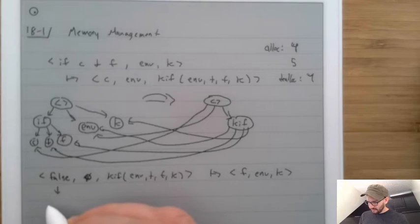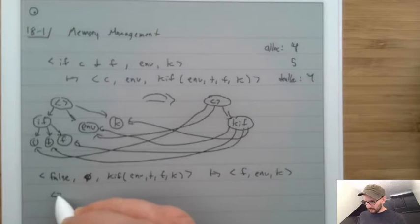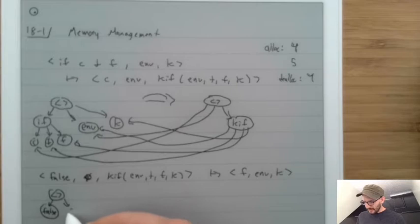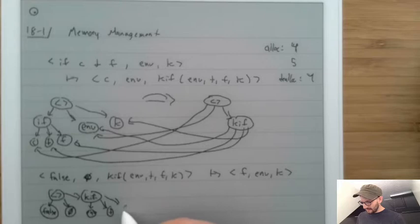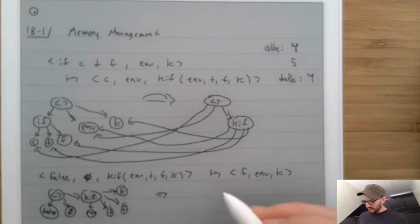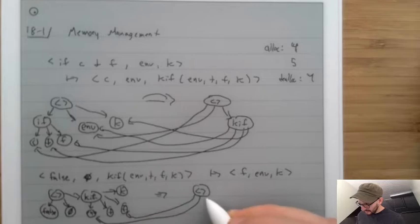We have our tuple pointing to false, pointing to empty, and pointing to the kif. The kif is pointing to an environment, t, f, and k. Then we switch to a new tuple — which we don't count as allocation since we reuse the same space — and it points to f, the saved environment, and the same k.